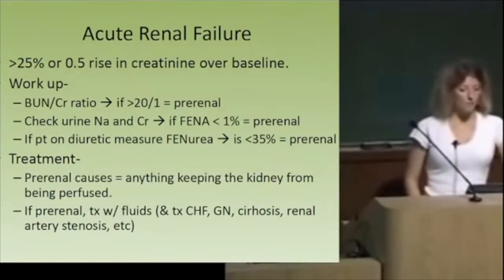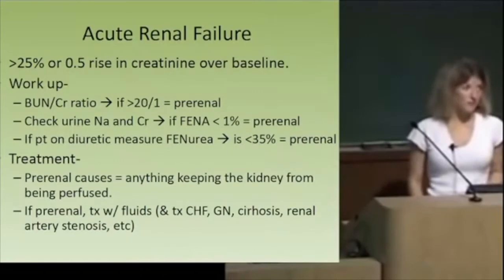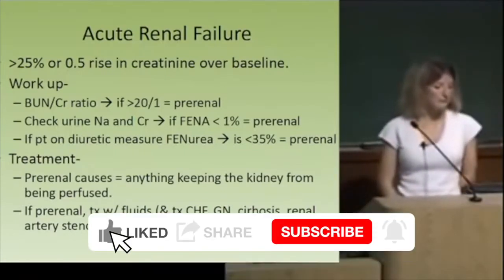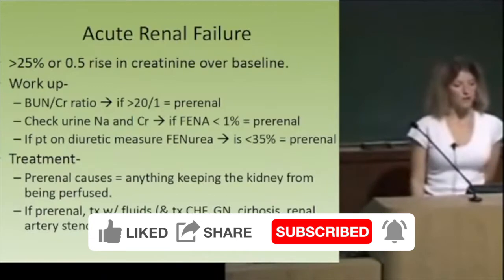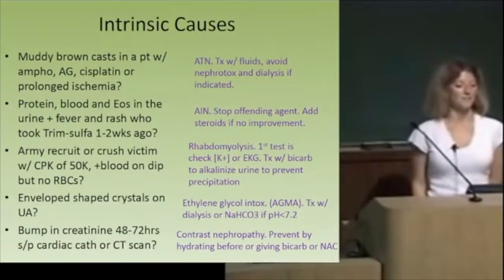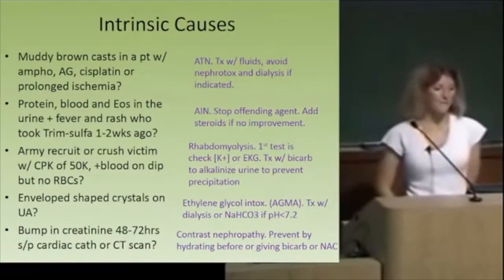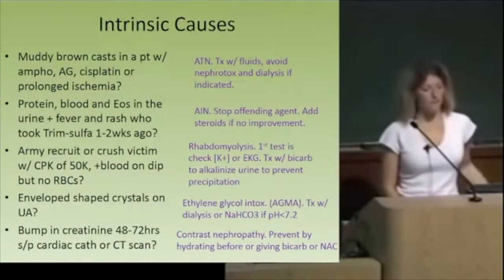Treatment is easy if it's pre-renal — replete the fluids or reverse the cause of the pre-renal azotemia. It can be caused by anything that prevents blood flow to the kidneys, either global hypoperfusion or renal artery stenosis. For intrinsic causes — what would cause renal failure in a patient with muddy brown casts who received amphotericin, aminoglycosides, cisplatin, or had prolonged ischemia? That's ATN. Muddy brown casts on UA are the hallmark of ATN. What if the patient has protein, blood, and eosinophils in the urine, plus fever and a rash after taking TMP-SMX?